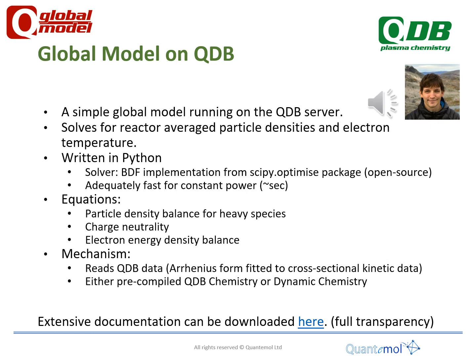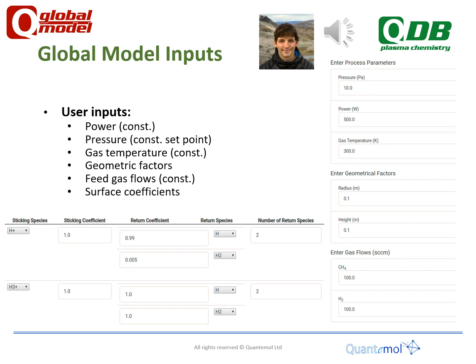There is extensive documentation which users are directed to on any page where they interact with the global model on the QDB website. It contains all the reactions, all the equations, and pretty much everything the model solves, very explicitly — aimed for full transparency. When I was writing it, my aim was that anybody who reads it should be able to code it themselves and get exactly the same results as the global model on the database.